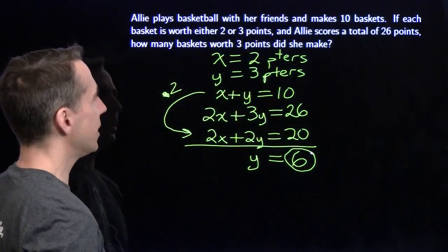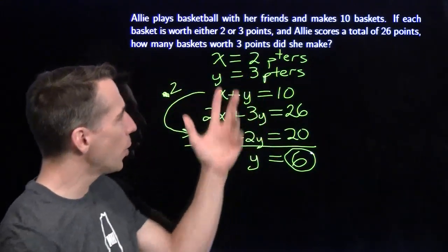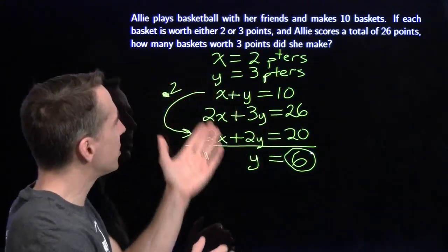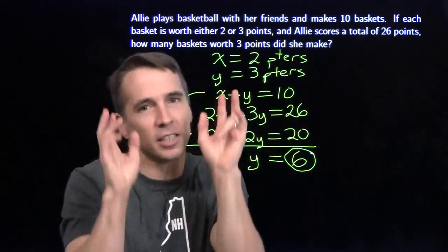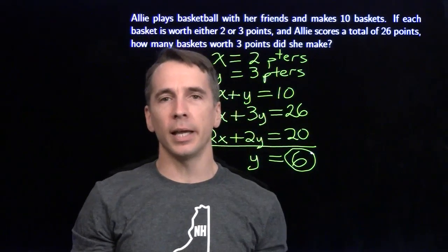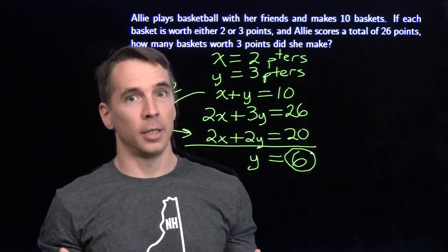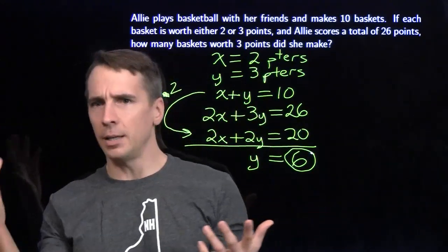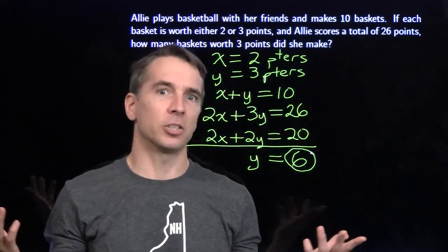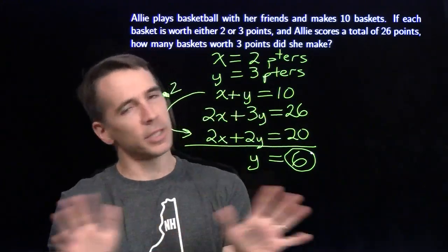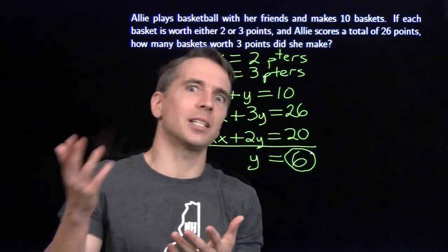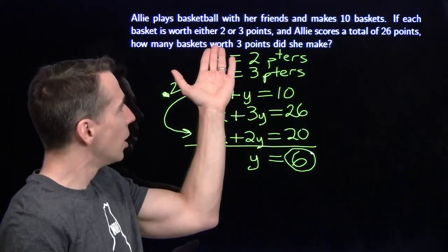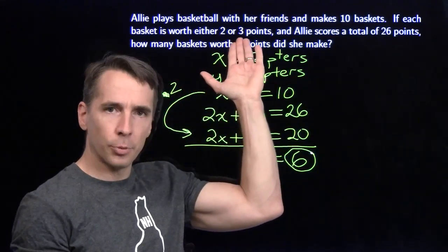When I'm looking at a problem like this, I'm just going to take a quick guess. What happens if all 10 of our baskets are 2 pointers? She's like back to the basket under the rim, dropping in the layups. If she does that, 10 baskets, 2 pointers each, that's only 20 points. So that must not be what she's doing, because she needs 26 points. She needs 6 more points.